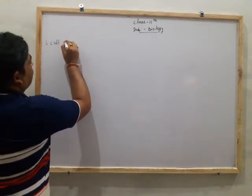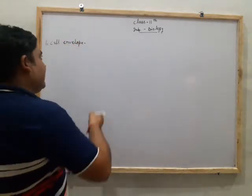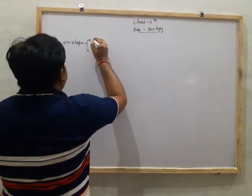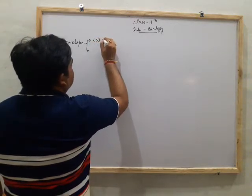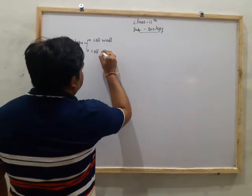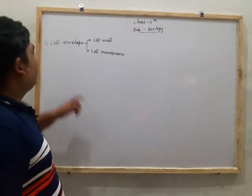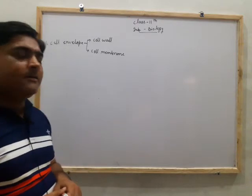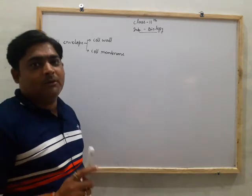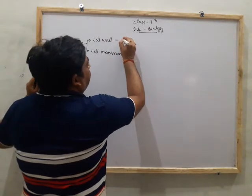Number one: cell envelope. The cell envelope consists of two layers. The first is the cell wall, and the second is the cell membrane. The cell wall is present only in plant cells, not in animal cells. In the plant cell, the cell wall consists of cellulose, pectin, and hemicellulose — these three substances form the cell wall.